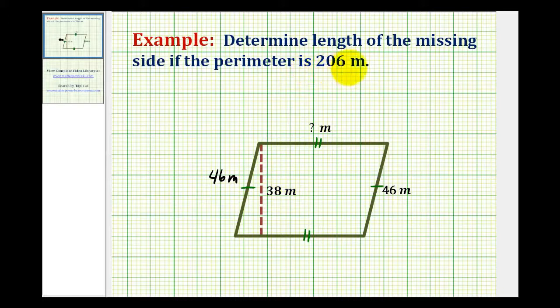But now if we take the perimeter of 206 meters and subtract out the length of these two sides, it will leave the length for the remaining two sides. And since they're equal in length, we can divide that by two to determine the length of the missing side. 46 meters plus 46 meters would be 92 meters.